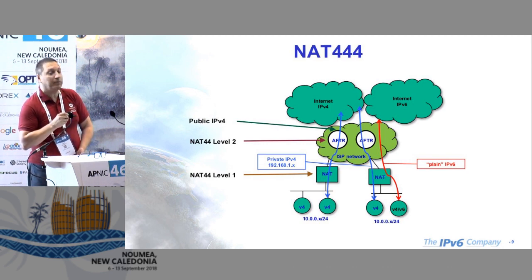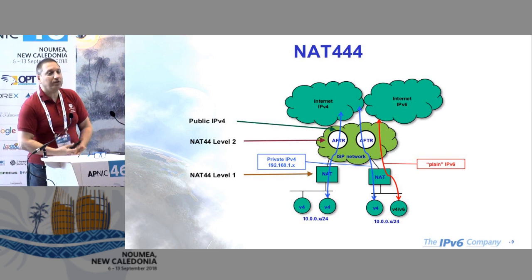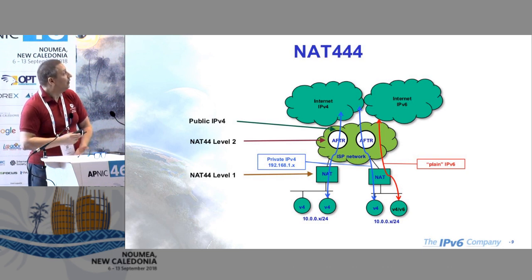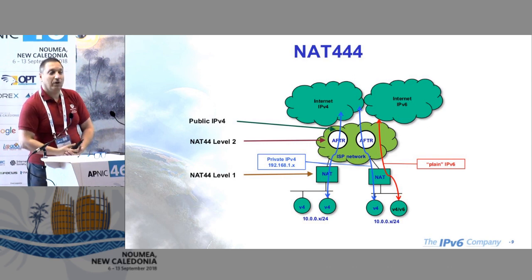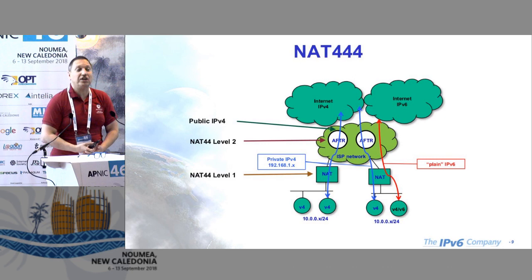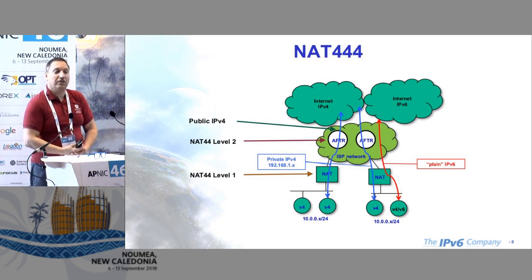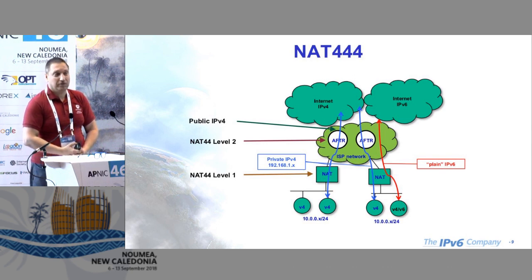Everyone in their network today typically has a NAT, and then we are setting up another NAT — two levels of translation. Some applications break because of that. Second issue: how do you share IPv4 addresses among customers? Obviously by reducing the number of ports allocated. For example, you can have 60 customers on a single IPv4 address by giving them only 1,000 ports each, which is not good.